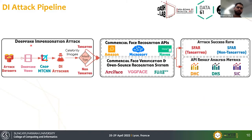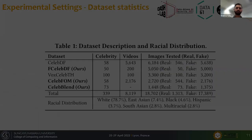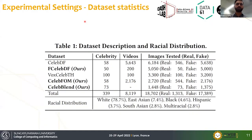This is our deepfake impersonation attack pipeline: we have the attack dataset, then the commercial APIs, and then we compare the metrics. For experimental settings, we use five different datasets with around 8,000 videos belonging to around 339–340 celebrities. The racial distribution is mostly white celebrities, followed by East Asian, Black, Hispanic, South Asian, and multi-racial.